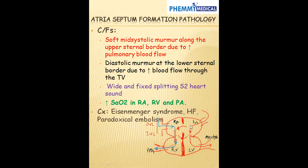Initially the blood coming from the left to the right was oxygenated blood, but now the blood shunting from the right to the left is deoxygenated. This leads to increased deoxygenated blood in the left atrium, then the left ventricle, then the aorta and systemic circulation. At this point the patient will have cyanosis, and that is why ASD is considered a cause of late cyanosis.